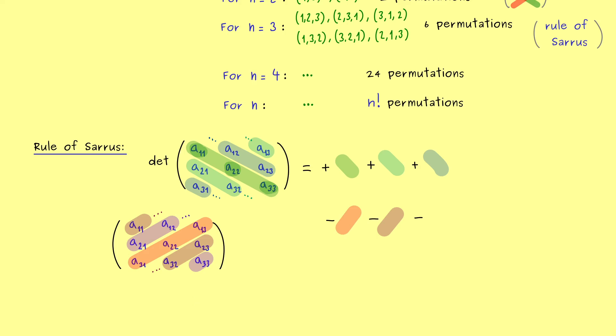Moreover the important thing to note is that we have indeed 6 terms in the sum. This is good because it means we didn't forget any permutation. And that's it. That's the whole Rule of Sarrus.